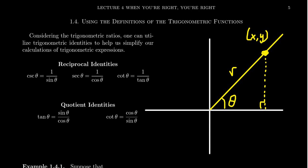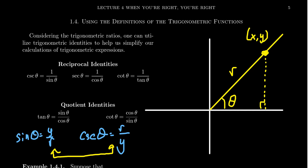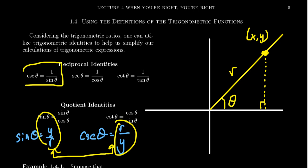We defined the six trigonometric ratios using all the possible combinations of x, y, and r. To remind ourselves, sine theta equals y over r, and cosecant theta is defined to be r over y. These fractions are just the same fraction flipped upside down — y over r versus r over y — these are known as reciprocals. If we take the reciprocal of sine, we actually get cosecant. So sine and cosecant are reciprocals of each other, and this gives us the first of the three reciprocal identities.